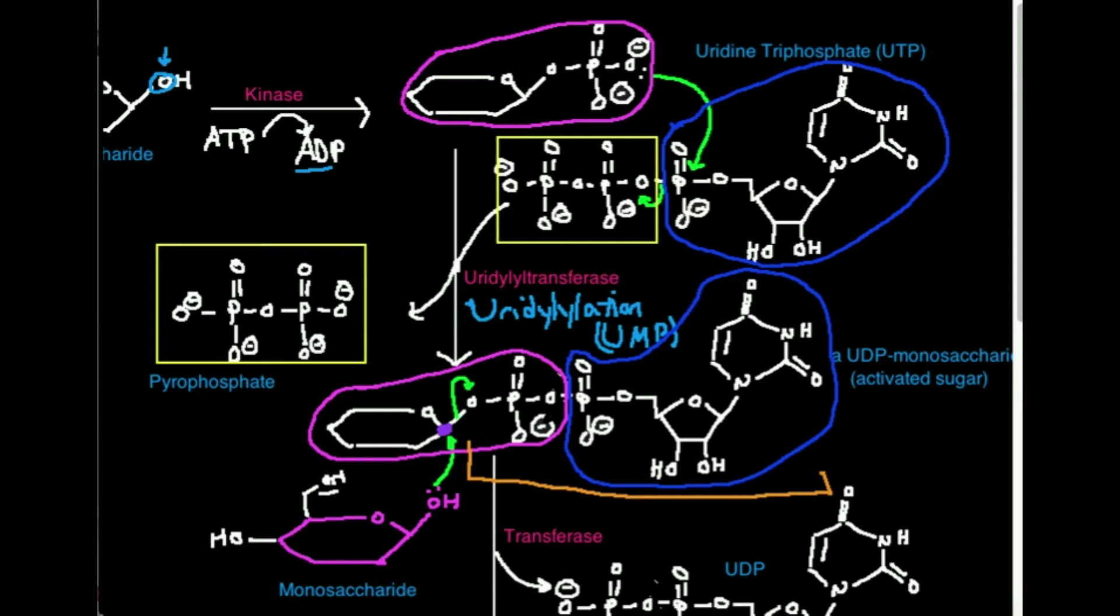Then we're going to uridylylate it with a uridylyltransferase, which just means attaching a UMP moiety onto the phosphate that's already there. So if we take a UMP and attach it to something that already has a phosphate, that effectively creates a UDP on here that's attached to a sugar or a monosaccharide.